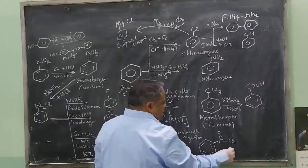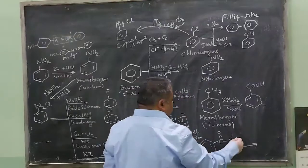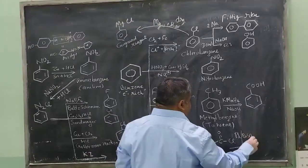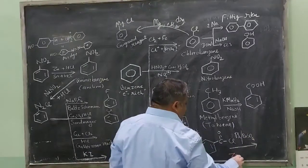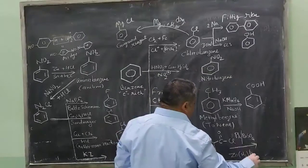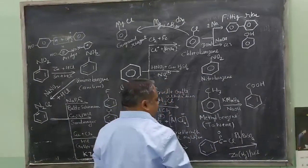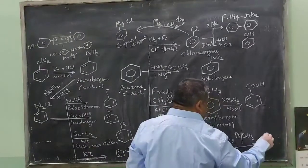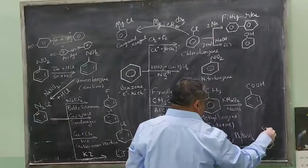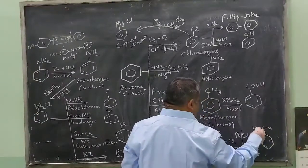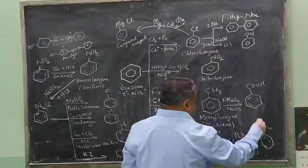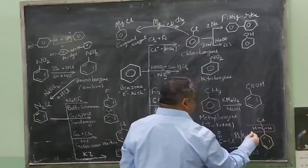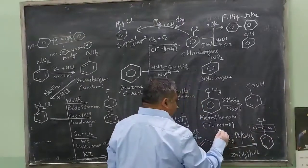If you reduce this molecule using palladium and barium sulfate or amalgamated zinc with HCl, it will form benzaldehyde. What is happening? This oxygen is getting reduced to aldehyde group.